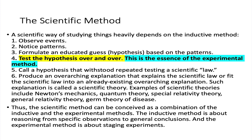Once you observe and notice patterns and formulate your hypothesis, this is when you proceed with your experiment. If you test the hypothesis over and over again and do not refute it, then you elevate that hypothesis into a scientific law — you may also call it a law of nature. That's how science is done.